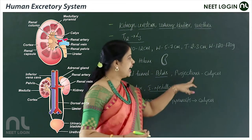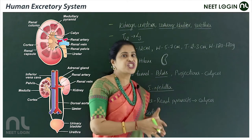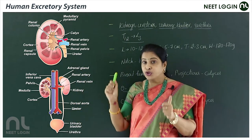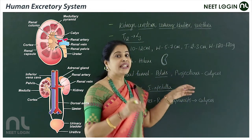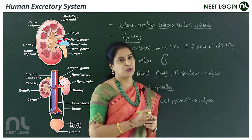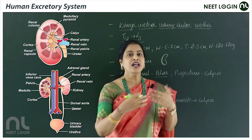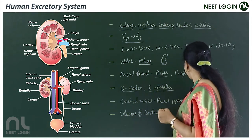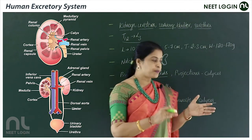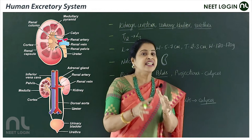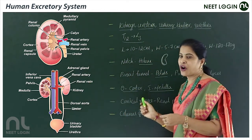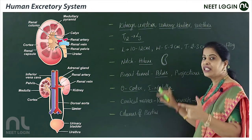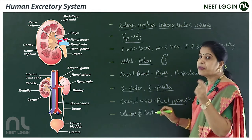The renal pelvis extends as the ureter — the tubes emerging from the kidneys. The pelvis shows projections called a calyx (singular) or calyces (plural). In the medullary part of the kidney, there are conical masses called renal pyramids, and the tips of the renal pyramids are called renal papillae.